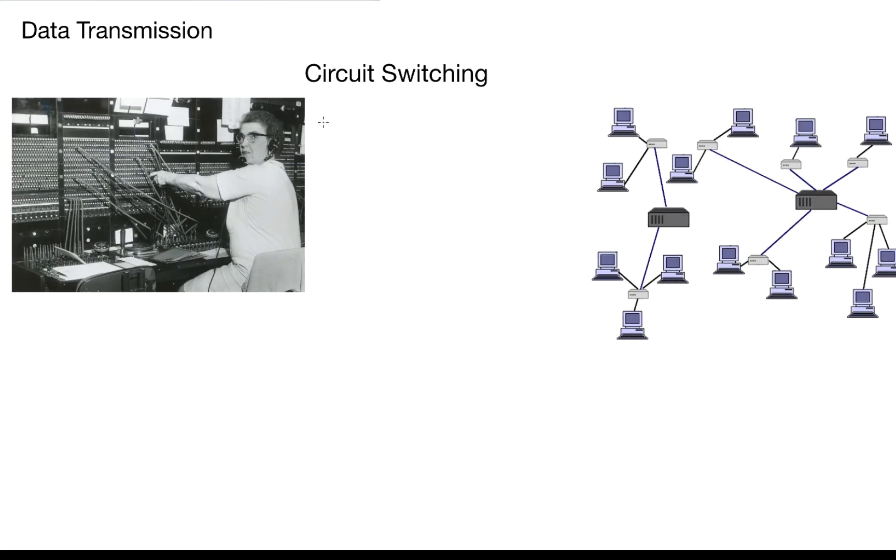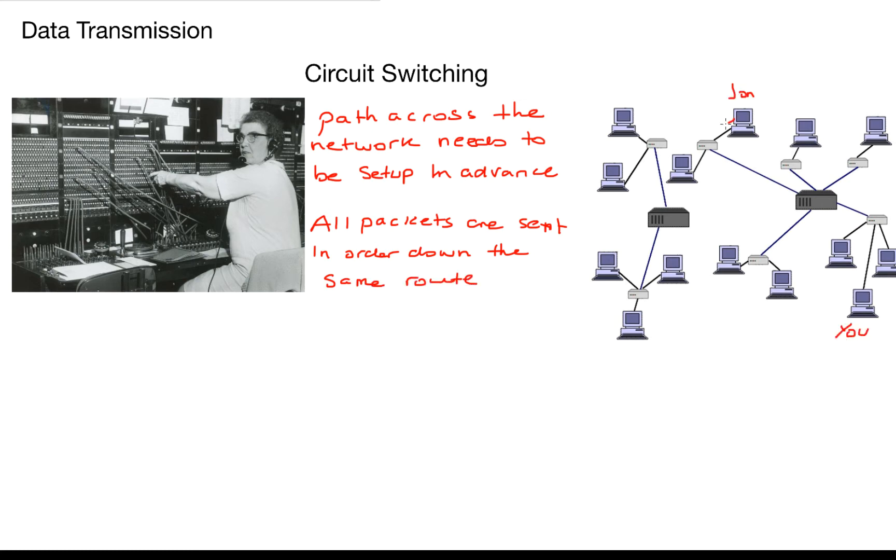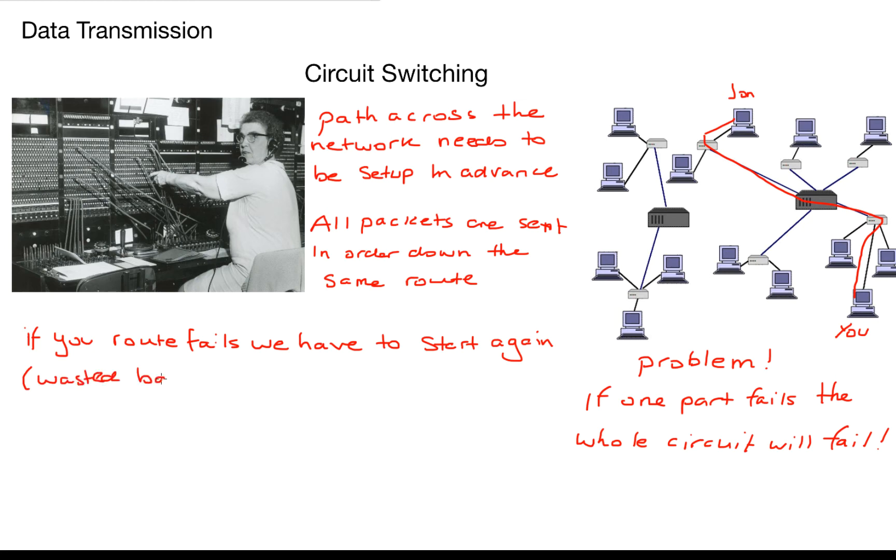The one method of doing this is circuit switching and this is quite a rigid method so there's a path across the network it needs to be set up in advance of our transmission. There is no rerouting here. All the packets are sent in order down the same route and that route is non-flexible. If you think back to the old school telephone operators she sets up the route between the person on one end of the line and the person on the other end of the line and then it never changes until the phone is hung up.